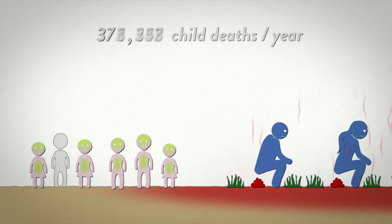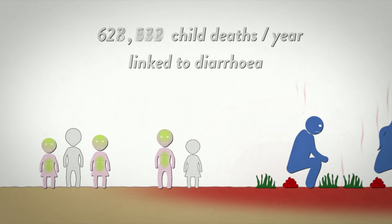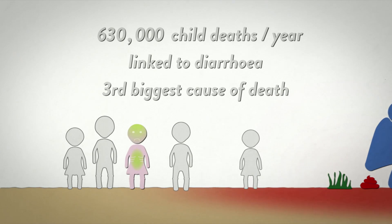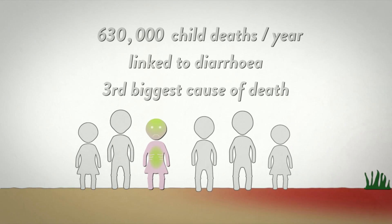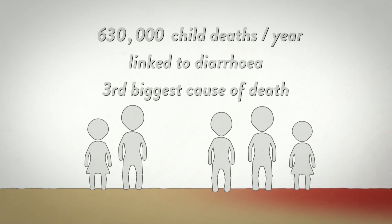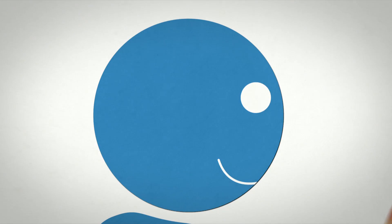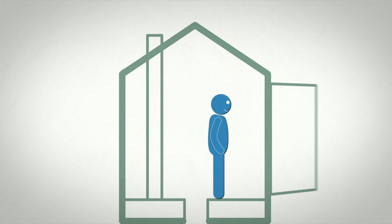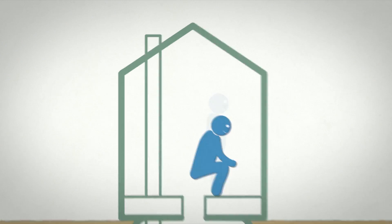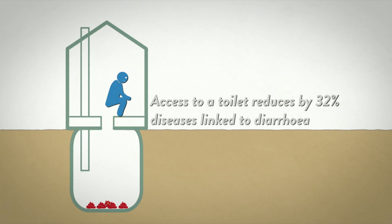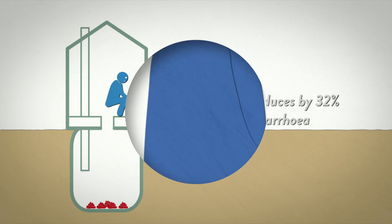Every year, diarrhoea is responsible for the death of more than 600,000 children — it is the third biggest cause of child mortality. This situation is unacceptable, not least because solutions exist. With proper access to toilets, diarrhoea infections can be cut by one third.